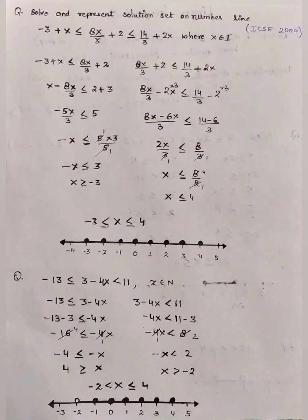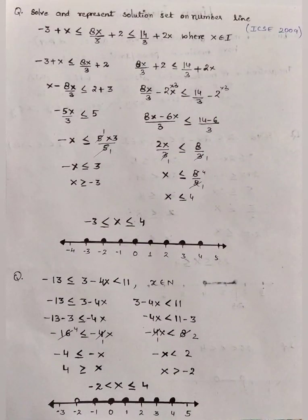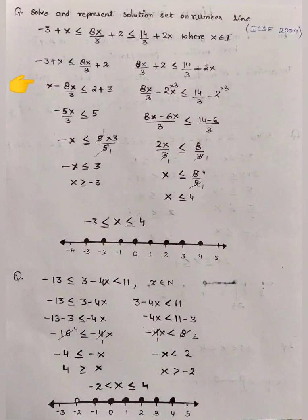Let's see the next question: solve and represent the solution set on a number line. The inequation is 8x/3 + 2 ≥ −3 + x and ≤ 14/3 + 2x, where x belongs to I, that is integers. To solve this, we again split the question into two inequations. Let us solve the first one: 8x/3 + 2 ≥ −3 + x.